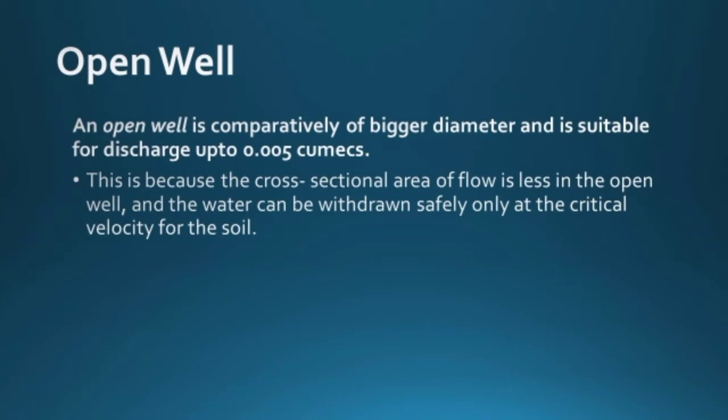Compared to the size of about 2 to 3 meter diameter of an open well, the discharge is comparatively less. This is because the cross-sectional area of flow is less in the open well, and water can be withdrawn safely only at the critical velocity. When you pump out water from an aquifer to the surface, there is a parameter called critical velocity — the maximum velocity of water that can be pumped without disturbing the soil particles near it.